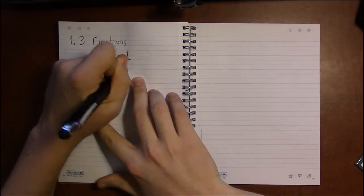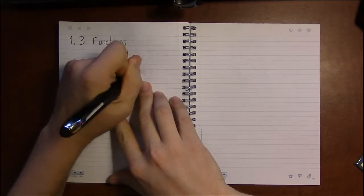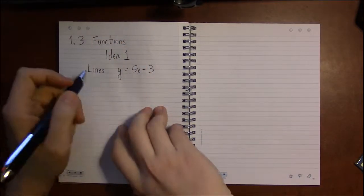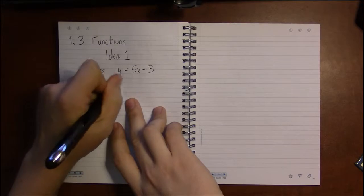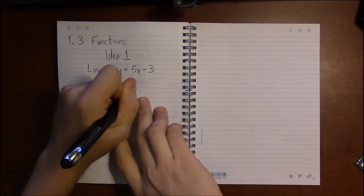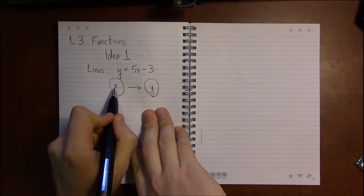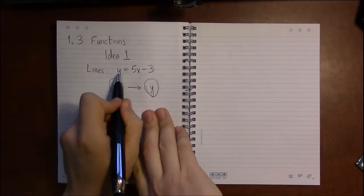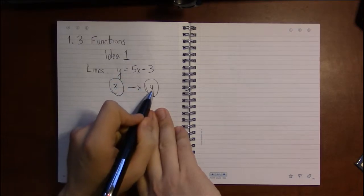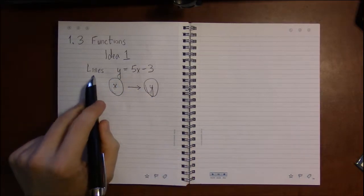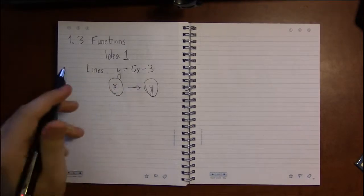y equals, say, 5x minus 3. This is a perfectly good function between x values and y values because every x value is going to have one and only one y value associated to it. So lines are perfectly good functions.